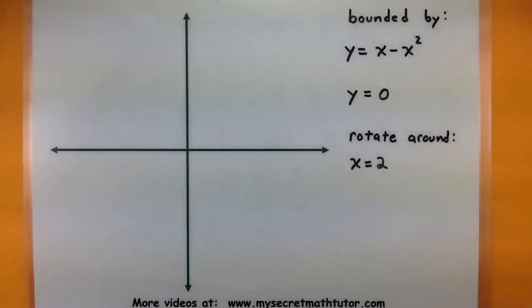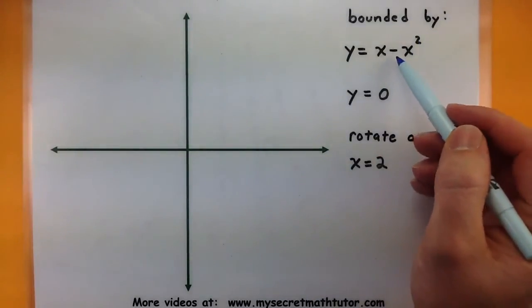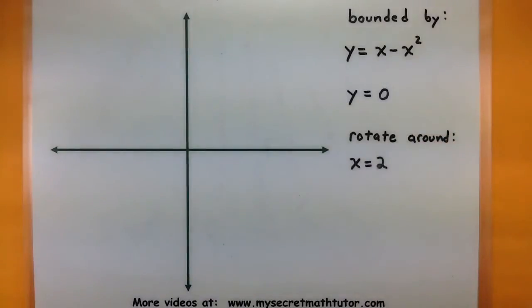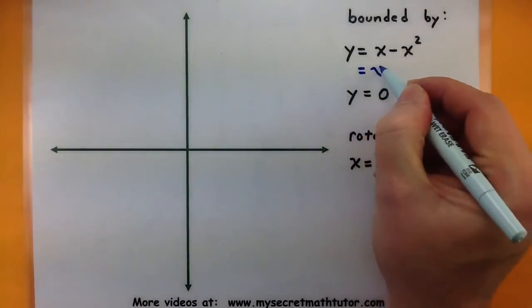So first I want to get a good idea of my bounding functions. This guy says y equals x minus x squared. I can see that it's a parabola because of my x squared, and it's facing down because of the negative sign out front.